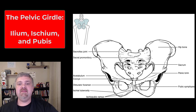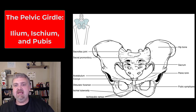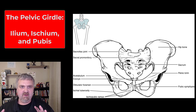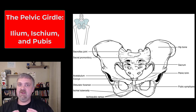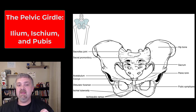Hey, everybody. Dr. O here. Let's talk about the pelvis. You'll see this called the coxal bone — the word coxal means hip — or the oscoxa. The pelvic girdle is going to be your three pelvic bones, and fused together they are called the coxal bone or oscoxa. But I will treat them as three separate bones: the ilium, the ischium, and the pubis.